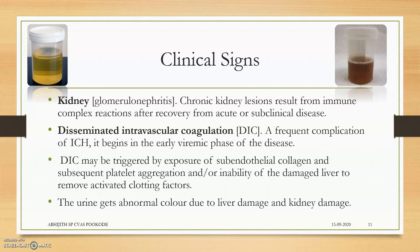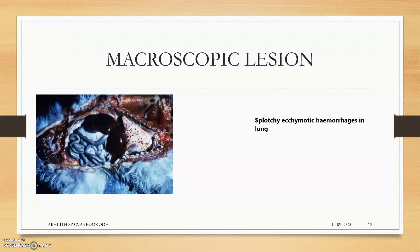Kidney clinical signs: glomerulonephritis mediated by antigen-antibody complex, and chronic kidney lesions resulting from immune complex lodging in the glomerulus. Disseminated intravascular coagulation is a frequent complication of ICH and produces many hemorrhages in the vessels. The urine is abnormal in color due to both liver damage and kidney damage.